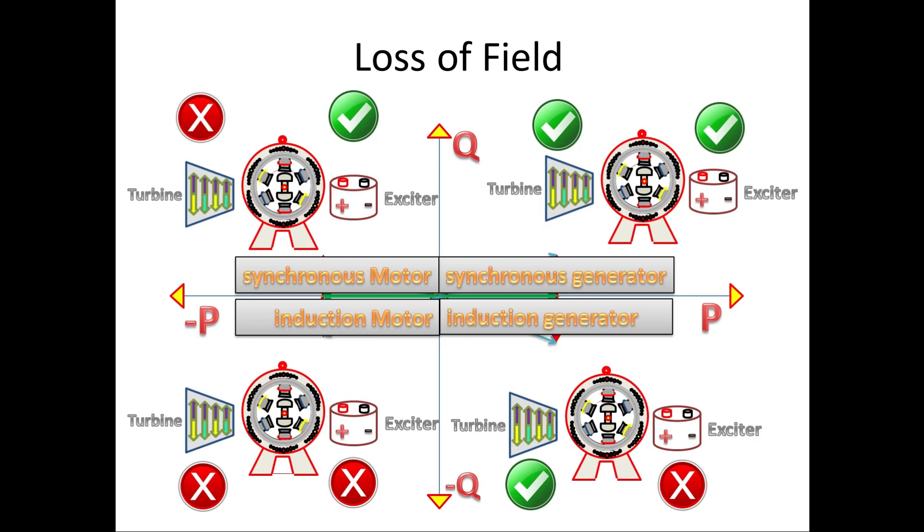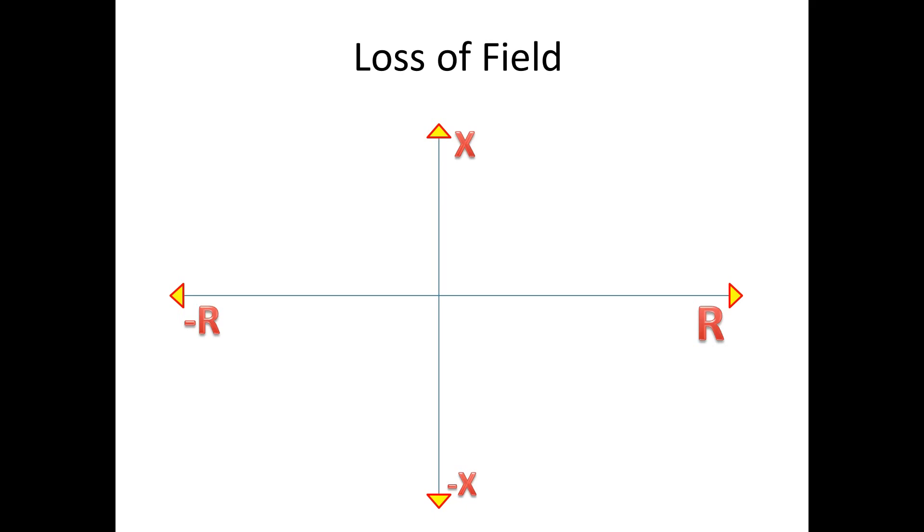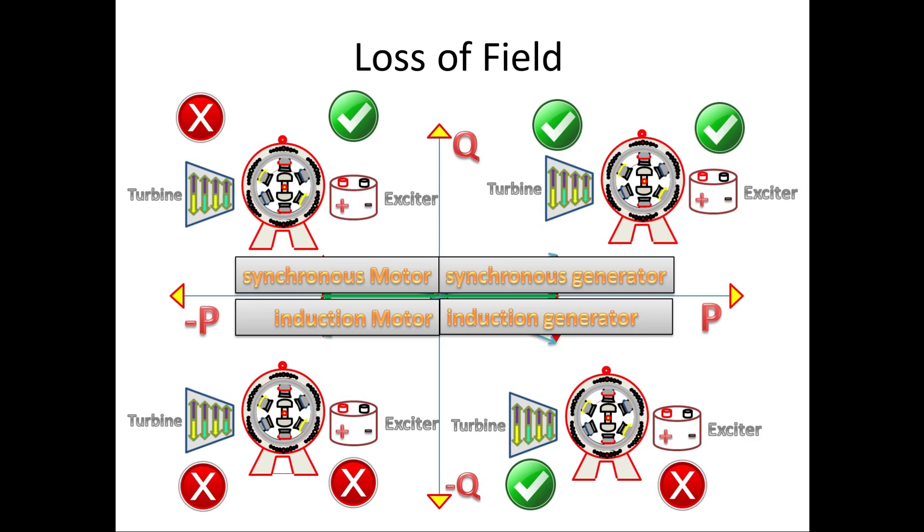From this we all can understand that the synchronous generator can run or modify into any quadrant, that is any mode of operation. But this synchronous generator is designed only for synchronous operation. That is it has to operate in first quadrant. If it operates in other quadrant due to failures of turbine control or exciter problem, then it is danger for system and generator.